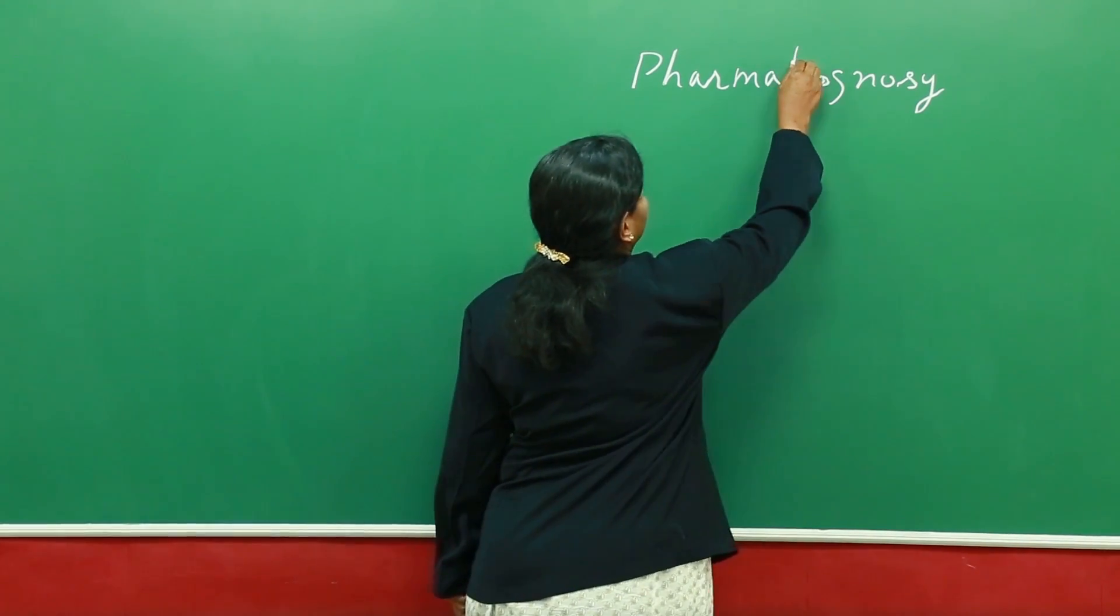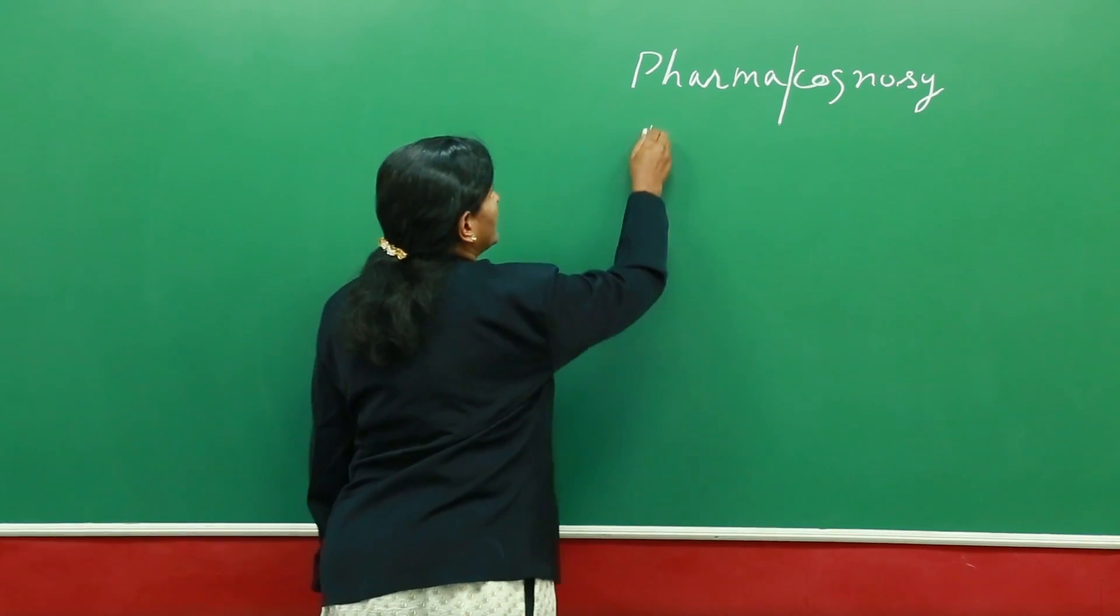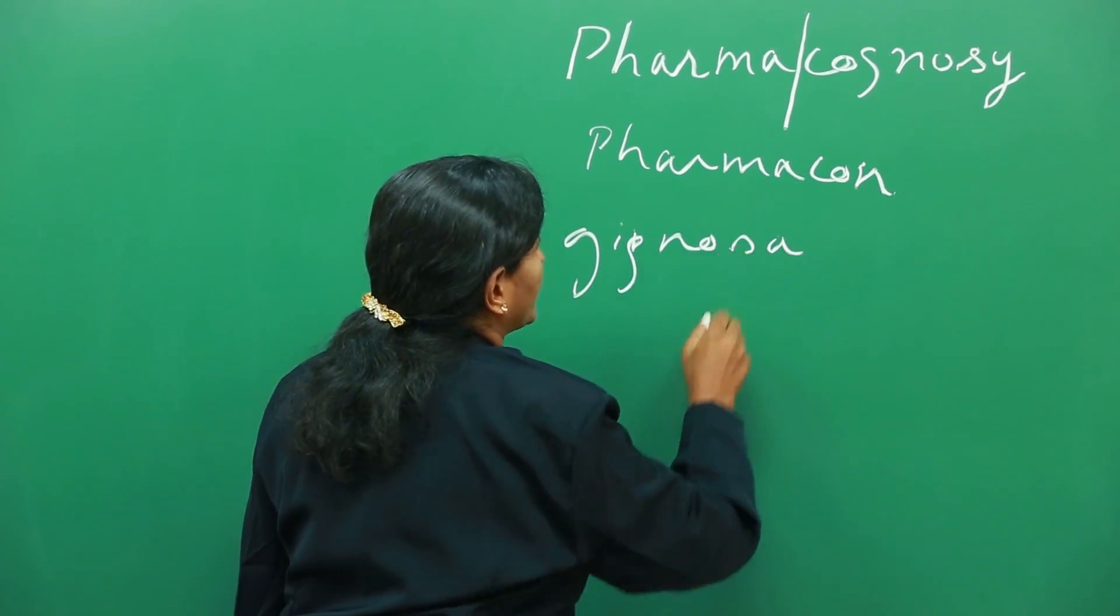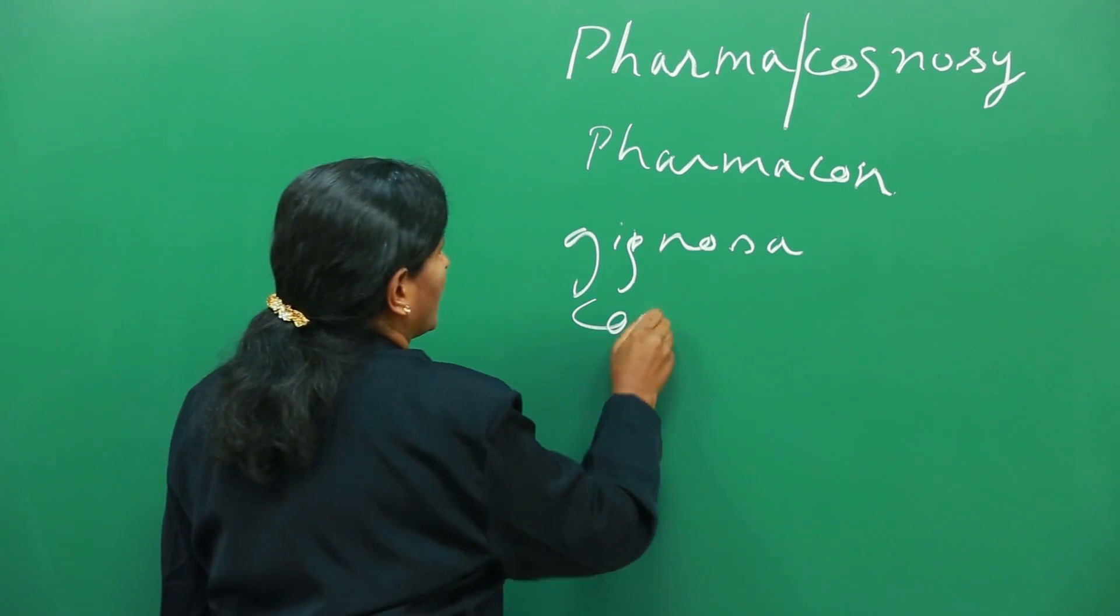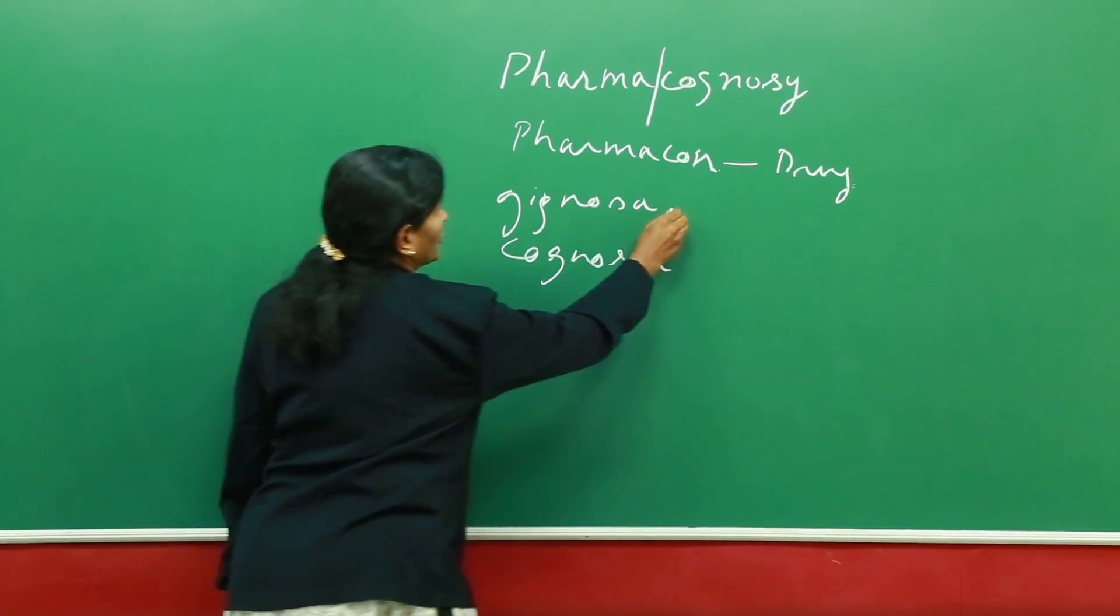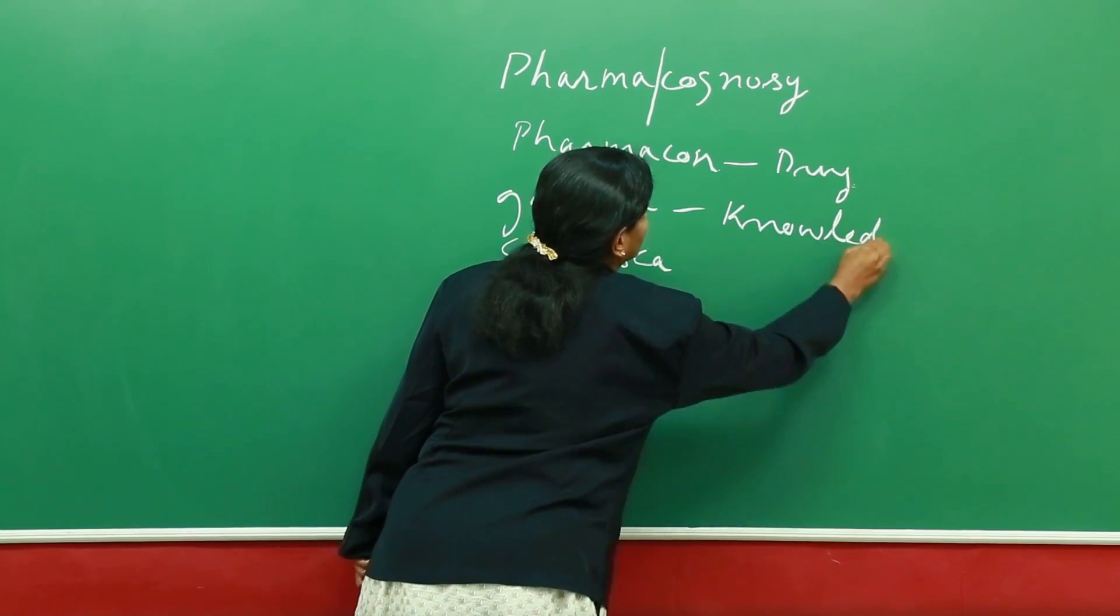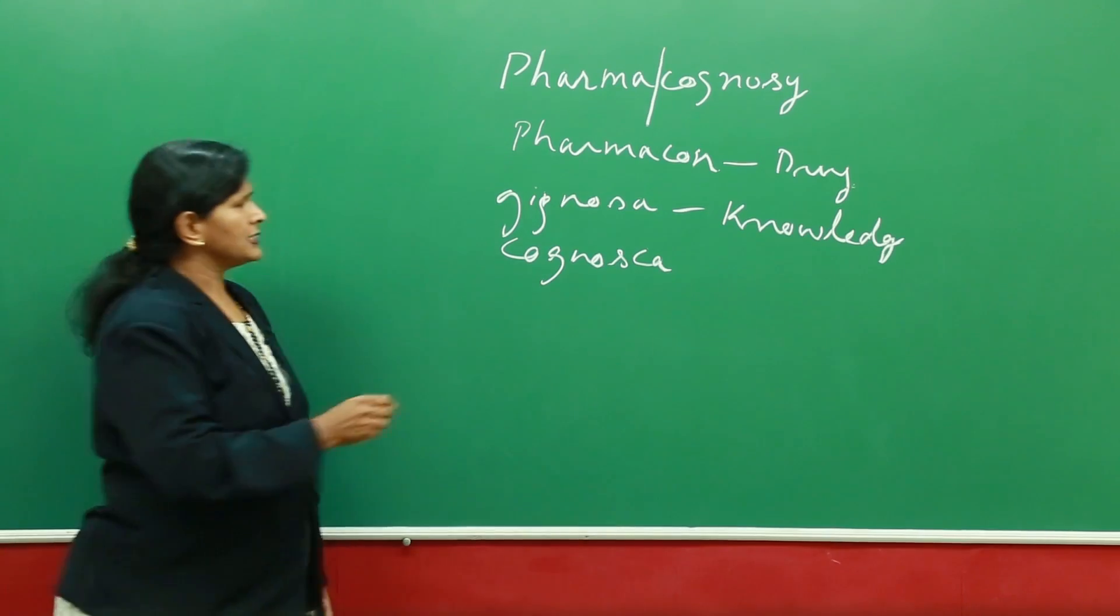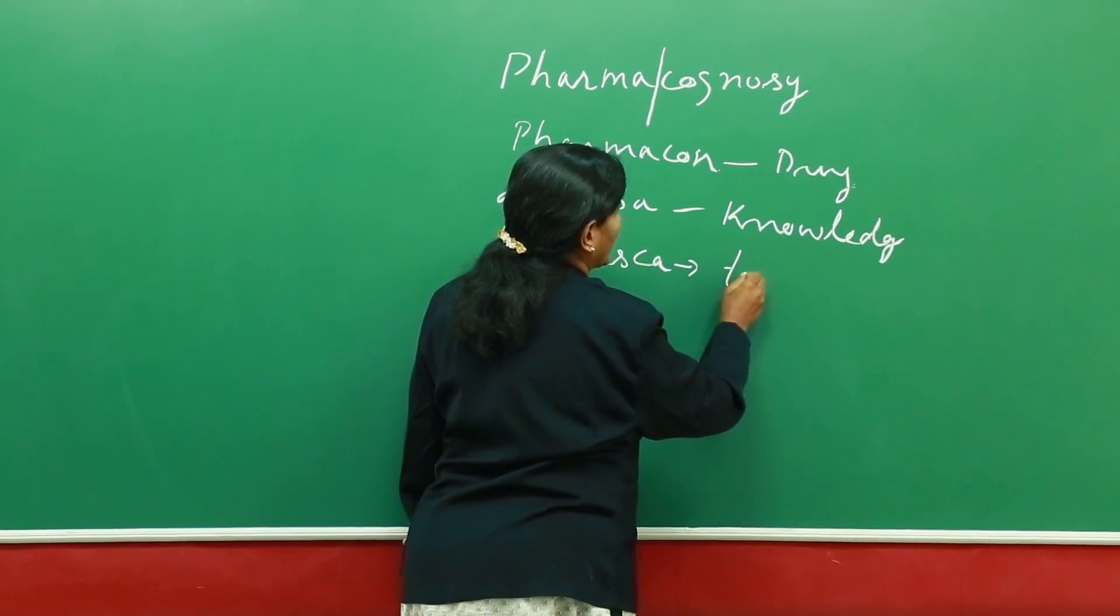Pharmacognosy is actually a word made up of two words: pharmakon and gignosa. Gignosa, sometimes called gnosy or kognoska. Pharmakon means drug, gignosa means knowledge. These two are Greek words. Cognosa is a Latin word which means to know or to acquire.